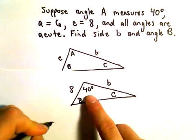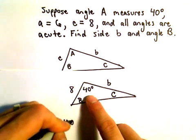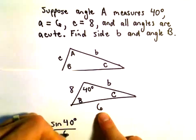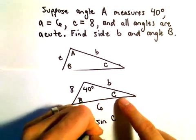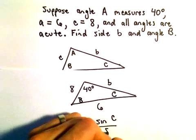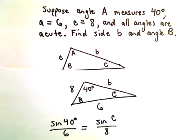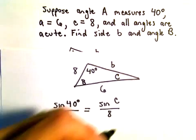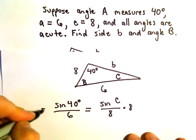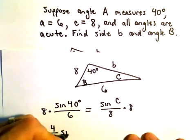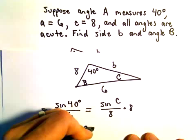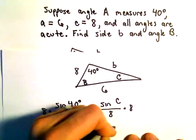Okay, so I'm going to take sine of 40 degrees over 6. That would equal sine of C, which we don't know, over 8. Alright, what I'm going to do is simply multiply both sides by 8. So we'll get 8 over 6, or 4 over 3, times sine of 40 degrees, equals sine of C.